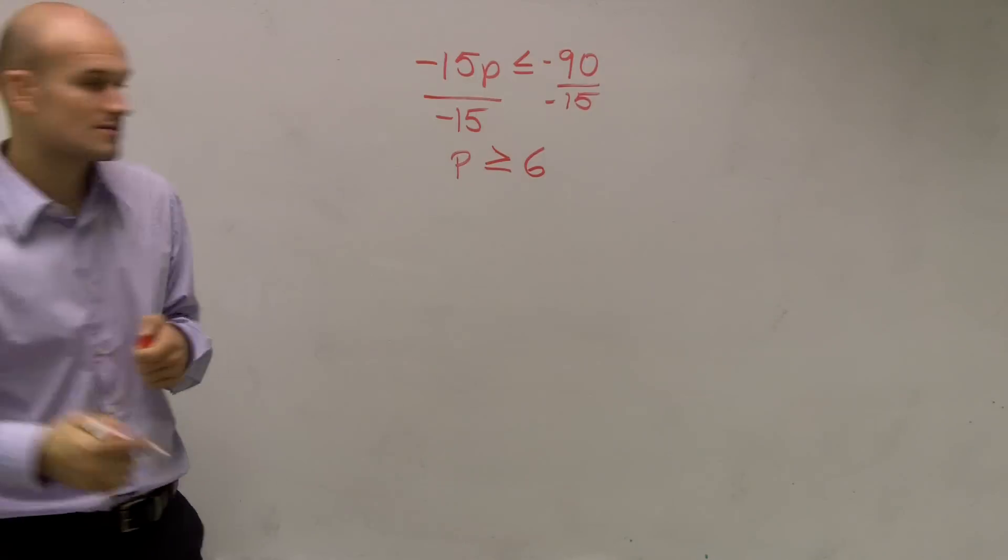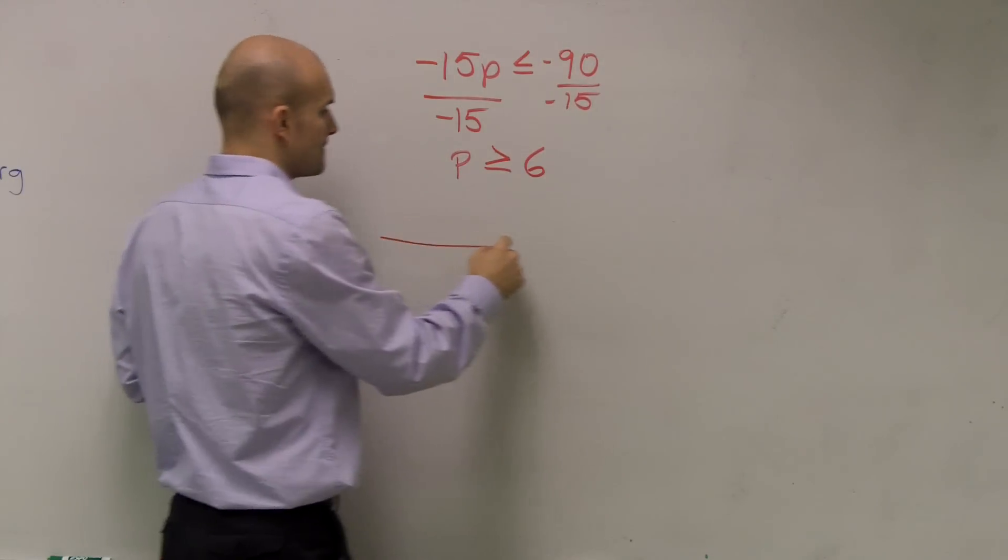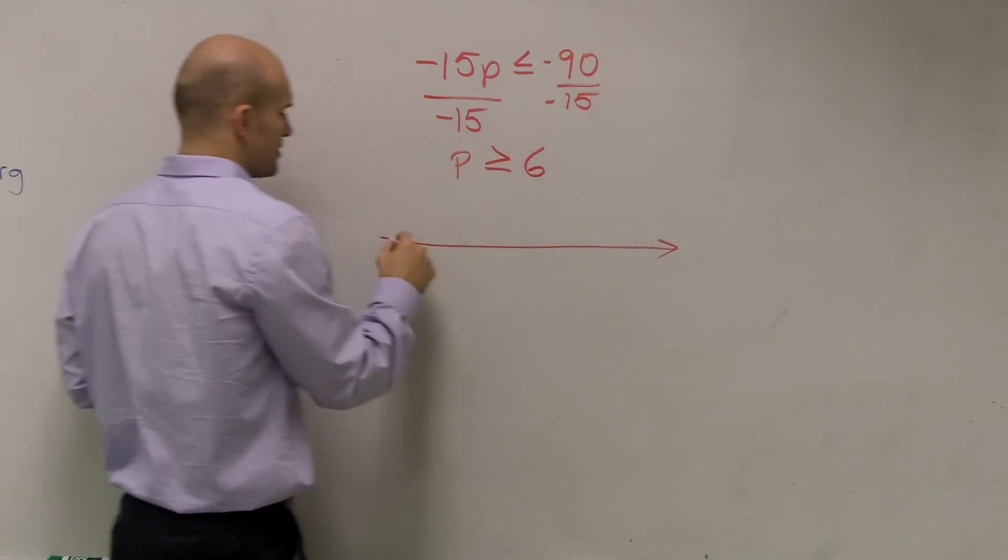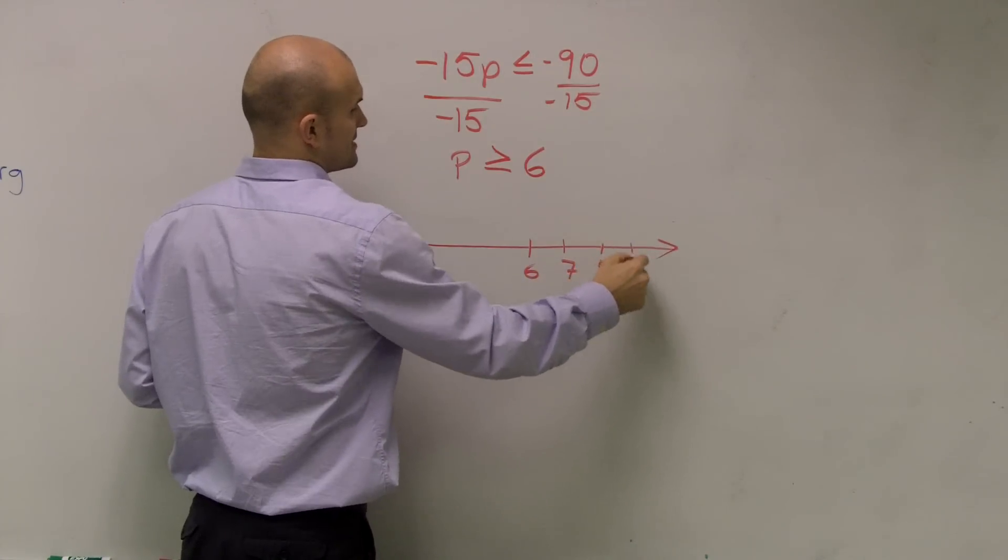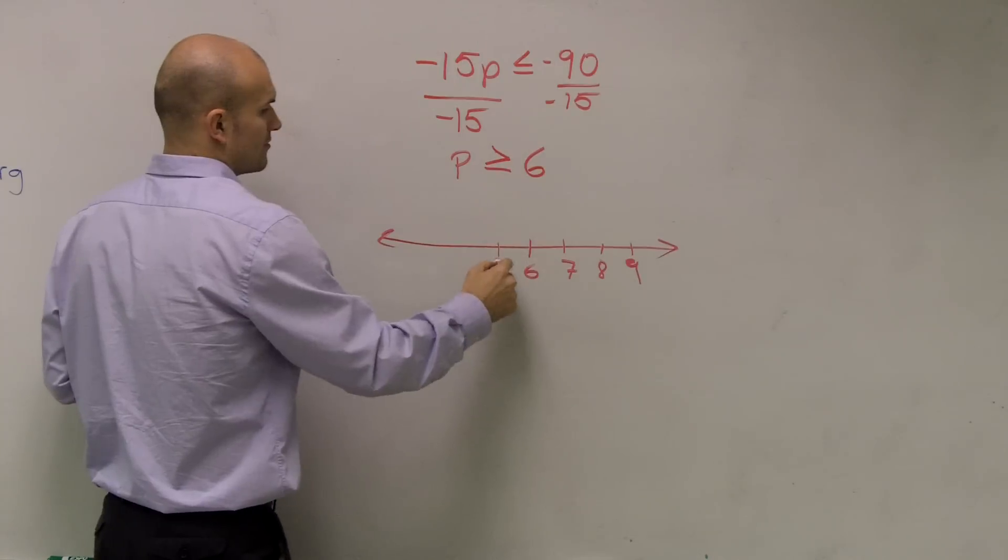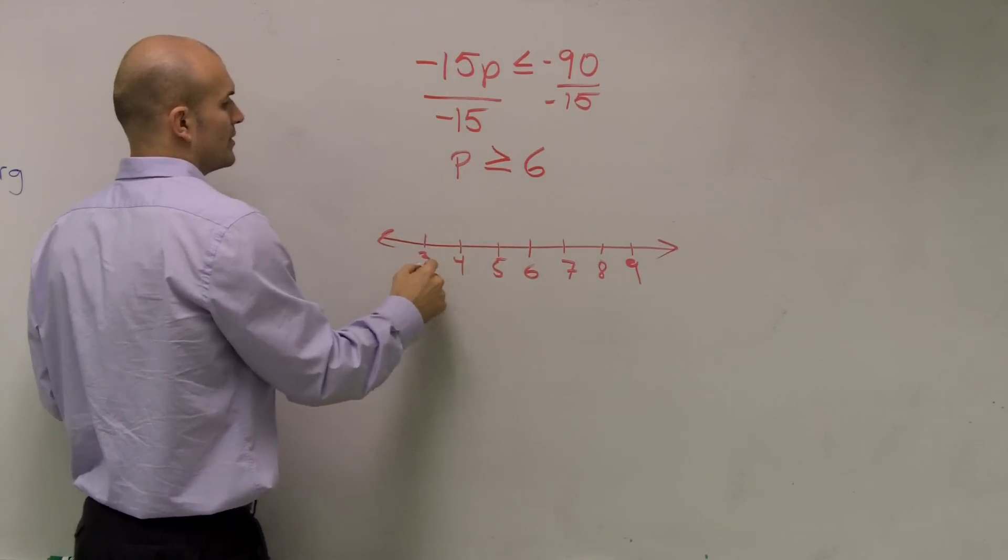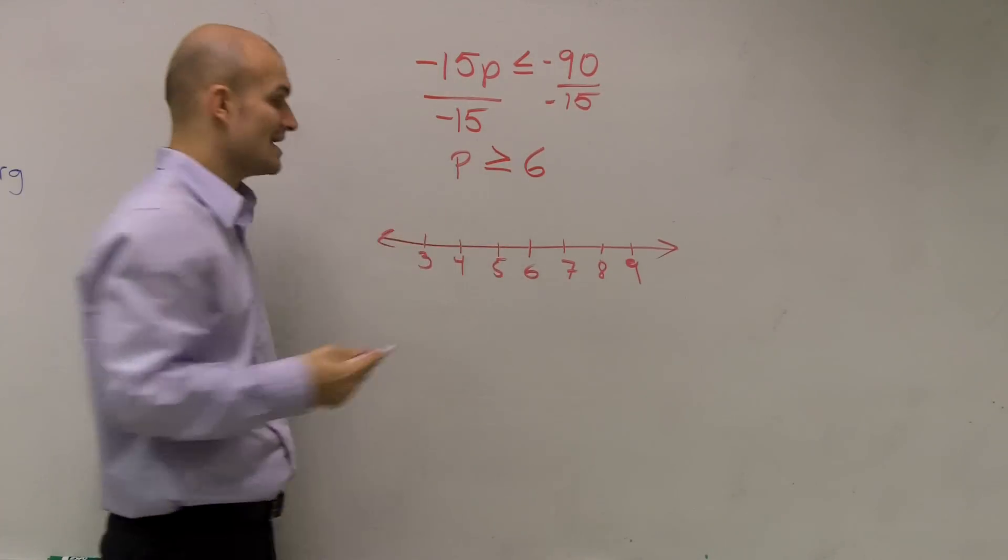Now what we need to do is graph this. So we're going to create a number line. I'm just going to make a very simple number line. I'll have 6 in the middle, 7, 8, 9, 5, 4, 3. I'm going to make a dot at 6.